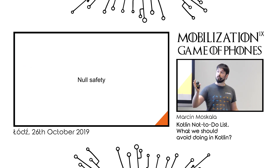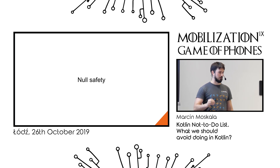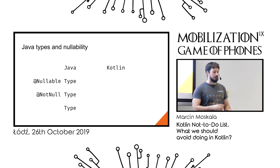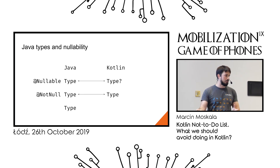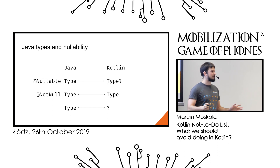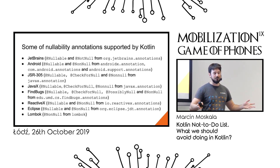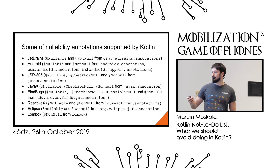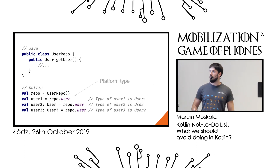Another problem is with null safety. Kotlin gives us great null safety mechanisms, but when we interoperate with Java, this doesn't always help. If we have @Nullable and @NotNull annotations, we get nullable or non-nullable types. But without such annotations, we end up with something called a platform type — a type with unknown nullability coming from Java — and we're essentially back to typical Java problems.